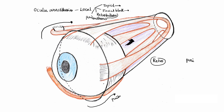When we instill anesthetic directly inside the muscle cone, we are anesthetizing the ciliary ganglion, ciliary nerves, and also cranial nerves 3 and 6. However, cranial nerve 4 is not anesthetized when we use retrobulbar block.